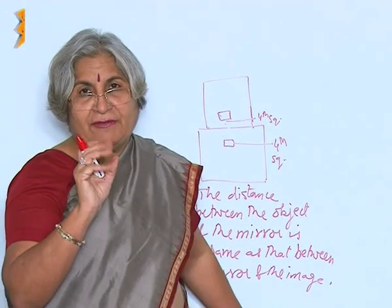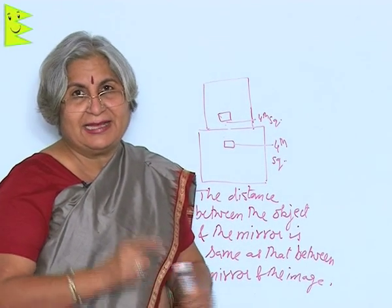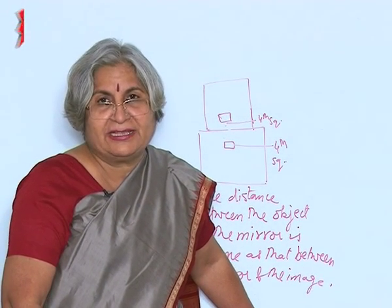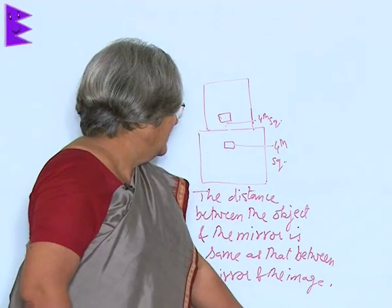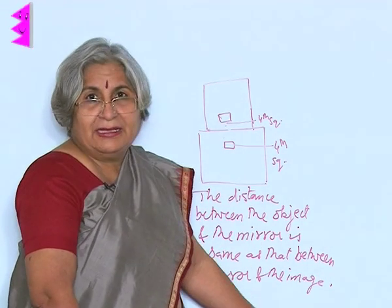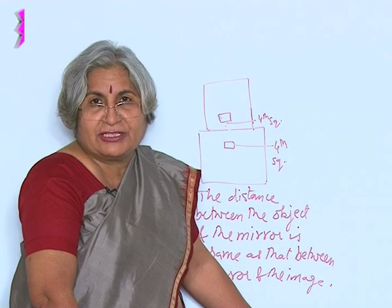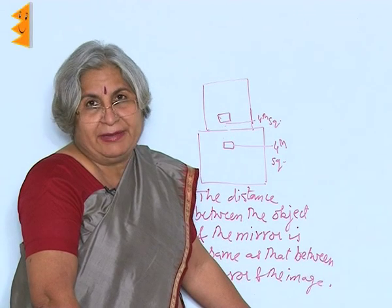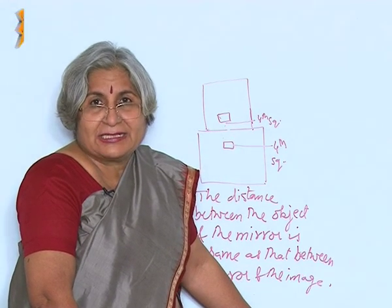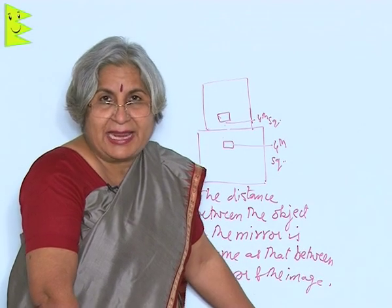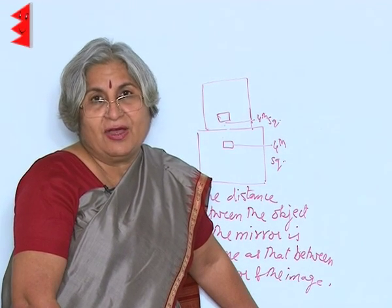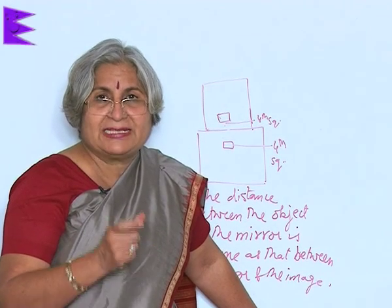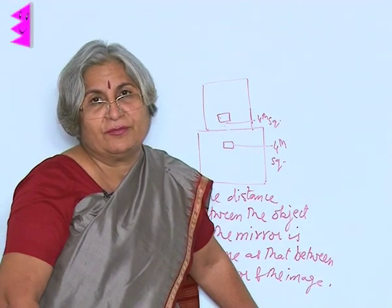So you have now learned three things about light. First, light travels in a straight line. Second, a mirror or polished surface can change the direction of light. Third, a shining or polished surface can reflect light and form an image. Finally, the distance between the image and the mirror is the same as the distance between the object and the mirror — the image is formed at the same distance as the object is from the mirror.